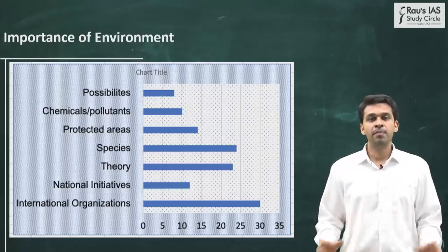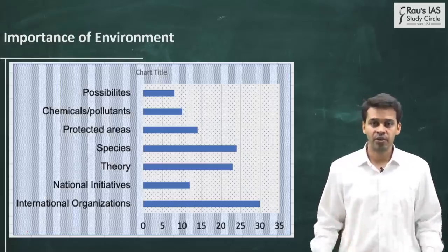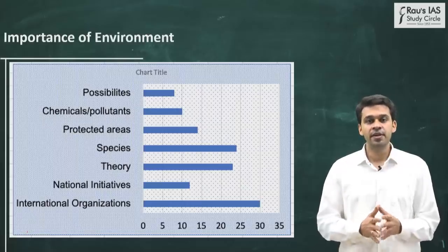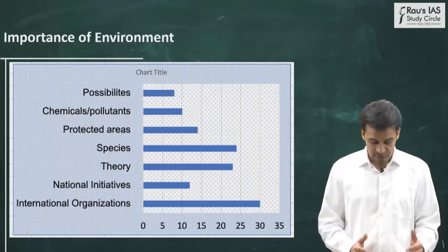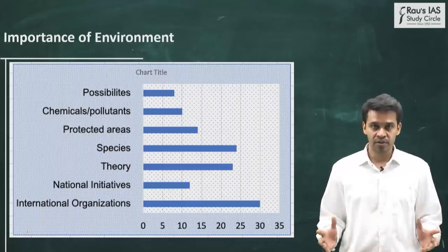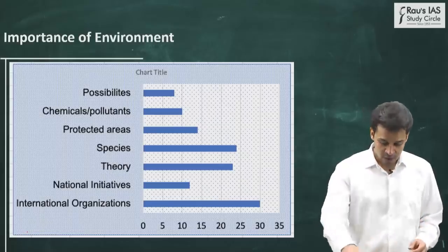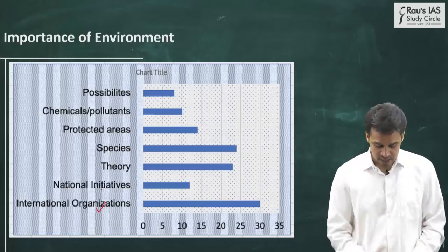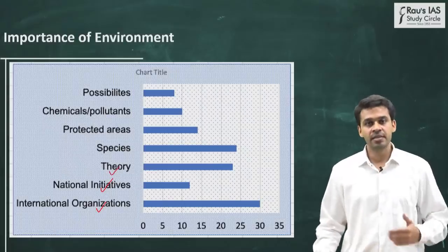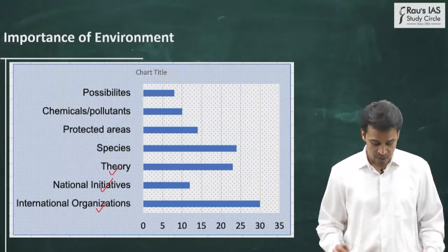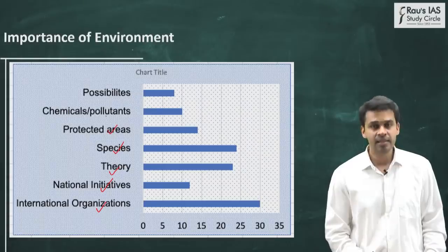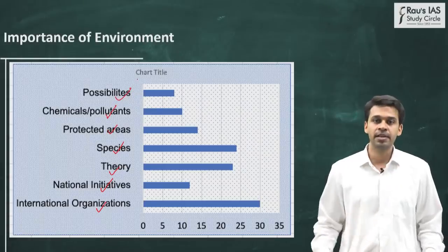It becomes very important to cover this topic exhaustively. These videos have divided the topics into two portions. In the first video, we are going to take up international organizations, national initiatives, and theories. Whereas in the second video, we will discuss species, protected areas, chemical pollutants, and possibilities.